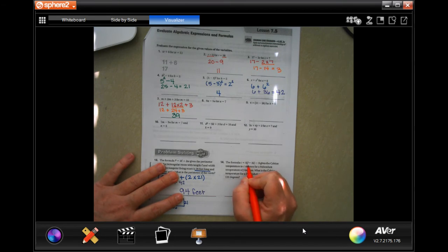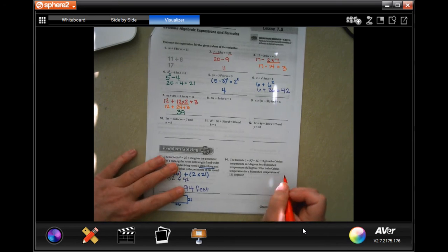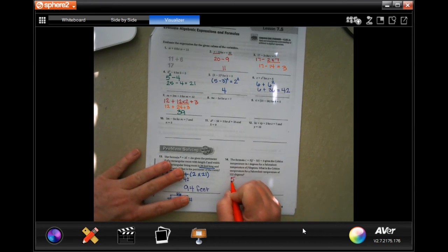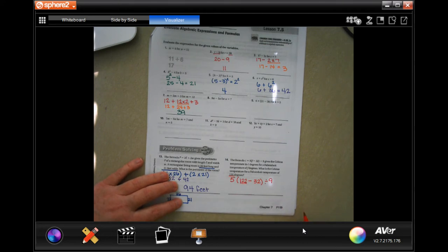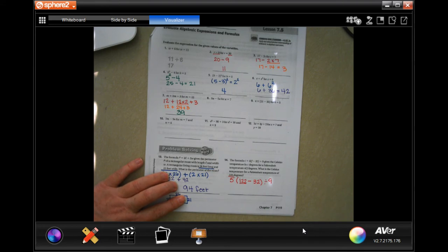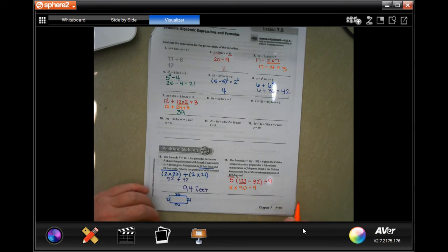The formula C equals 5 times F minus 32 divided by 9 gives the Celsius temperature in C degrees for a Fahrenheit temperature of F degrees. What is the Celsius temperature for a Fahrenheit temperature of 122 degrees? All I did was plug in what it told me Fahrenheit was. The rest of it stayed the same. So I still have 5. Instead of the parentheses, because I'm going to take care of the parentheses, I'm going to put a multiplication sign, because that means 5 times those, right? But we're going to just do this. 122 minus 32 is going to give us 90, and we're going to divide that by 9. So we're done with our parentheses. We don't have any exponents. We're going to take care of our multiplication and division.